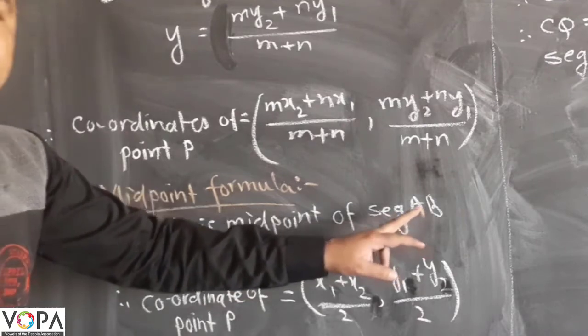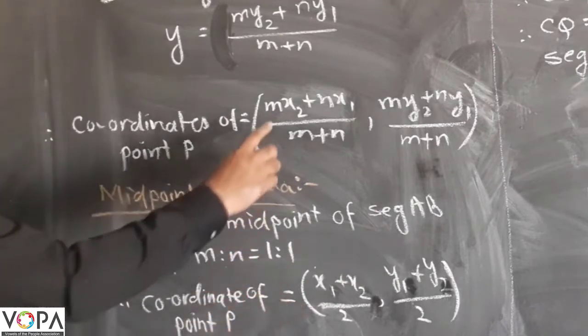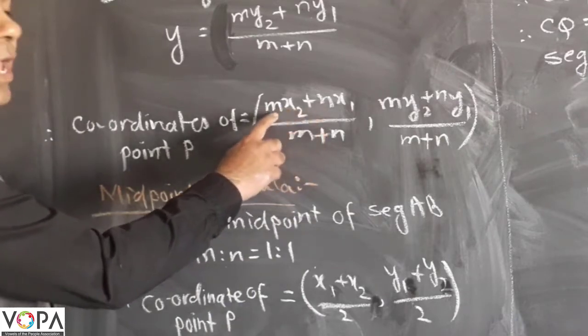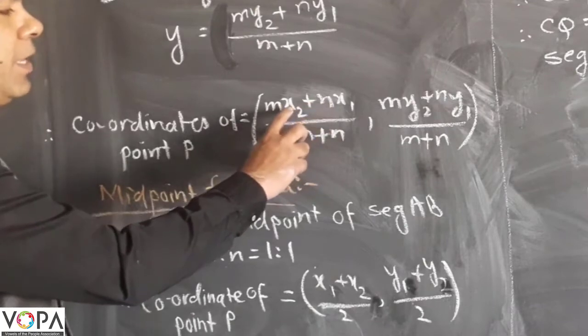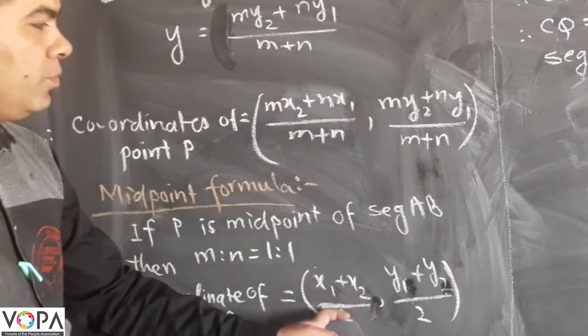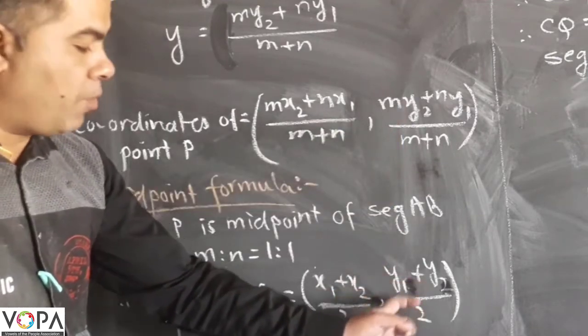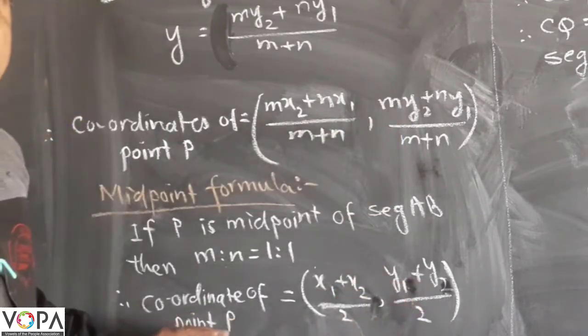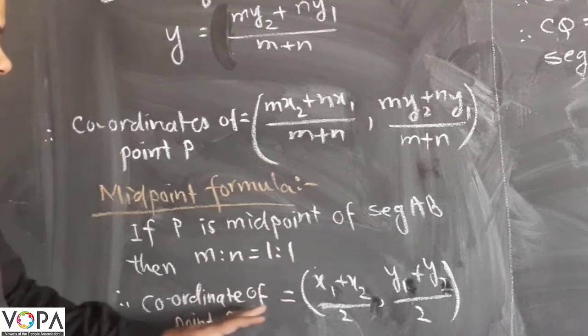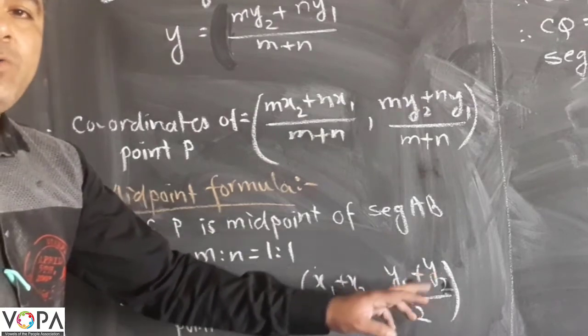If M equals N equals 1, then it will be X2 plus X1, but we have written as X1 plus X2 upon 2. Similarly Y1 plus Y2 upon 2. This is the formula for midpoint of a segment which divides segment AB in ratio 1:1. The coordinate of midpoint will be X1 plus X2 upon 2 and Y1 plus Y2 upon 2.